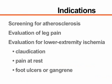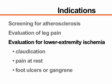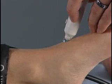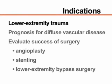Indications for measuring the ankle brachial index include screening for atherosclerosis, evaluation of leg pain, and evaluation of lower extremity ischemia. Consider lower extremity ischemia when there is a history of claudication, which may occur at the buttock, thigh, or calf levels, pain at rest, particularly in the foot, or foot ulcers or gangrene. In addition, the ankle brachial index is indicated in the evaluation of vascular compromise in patients with lower extremity trauma.